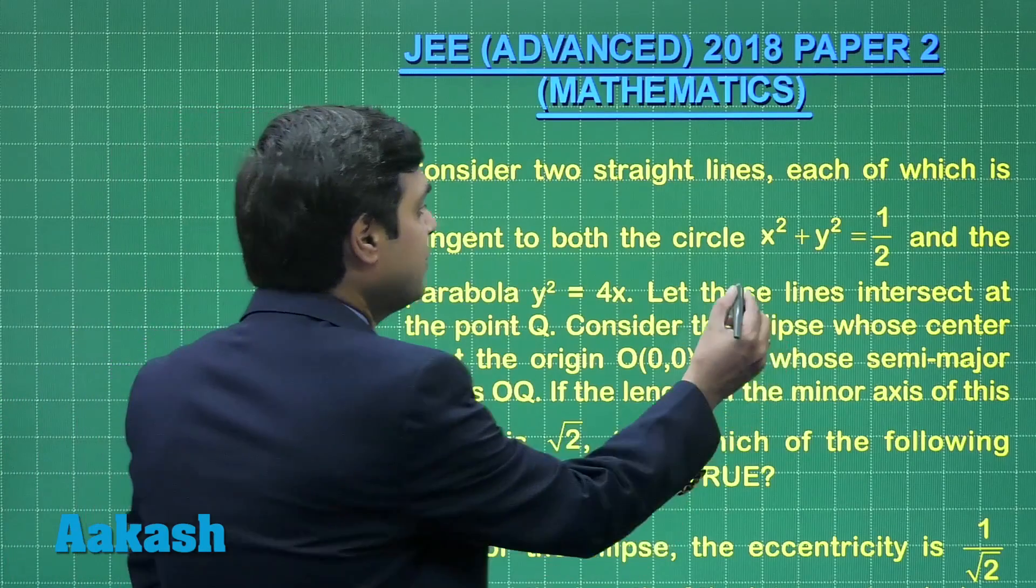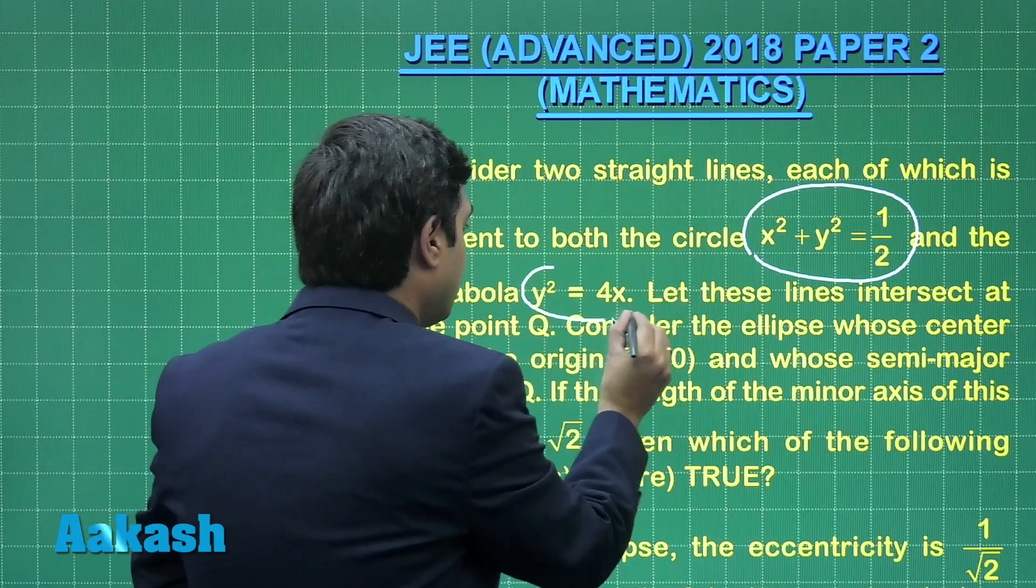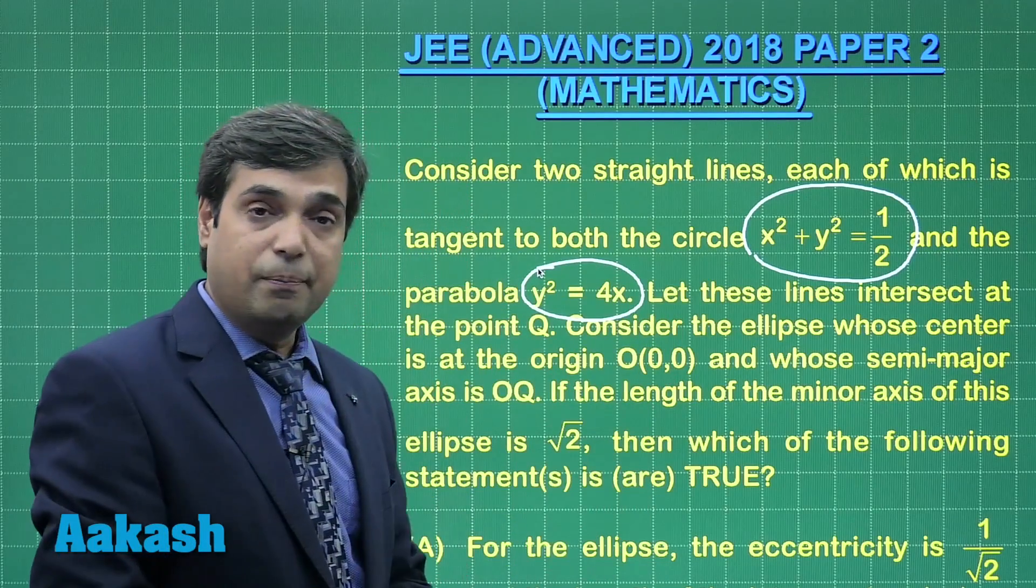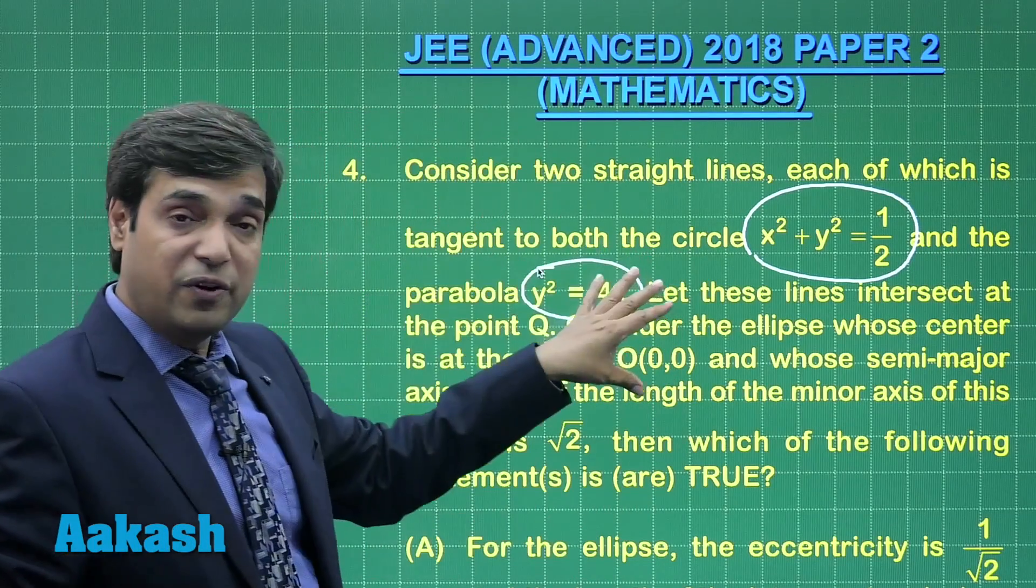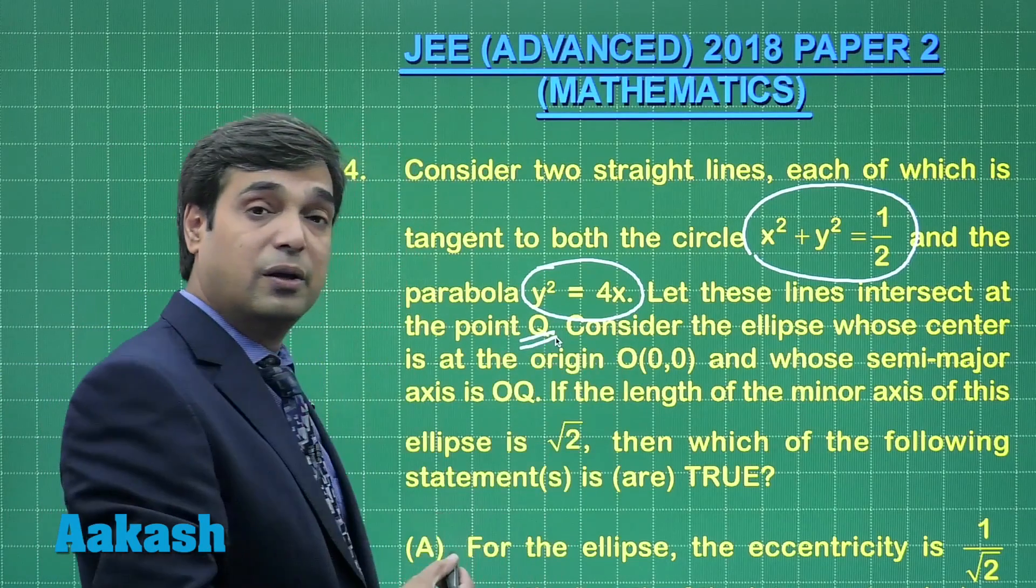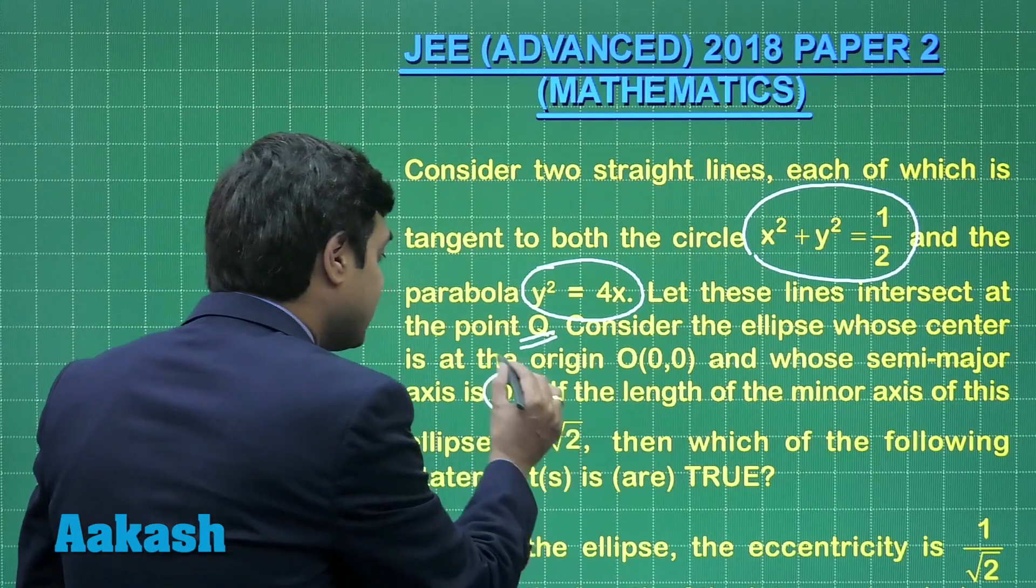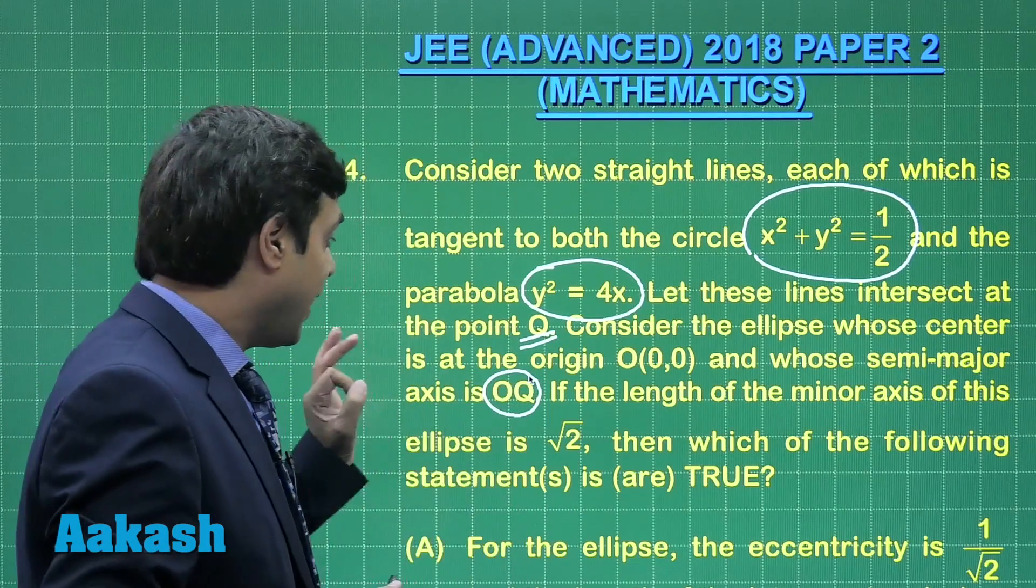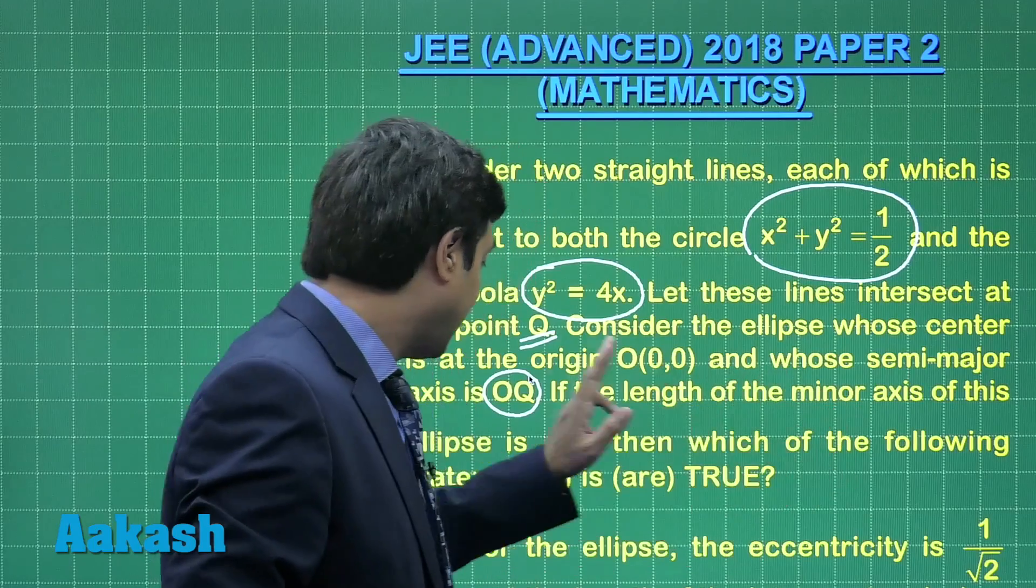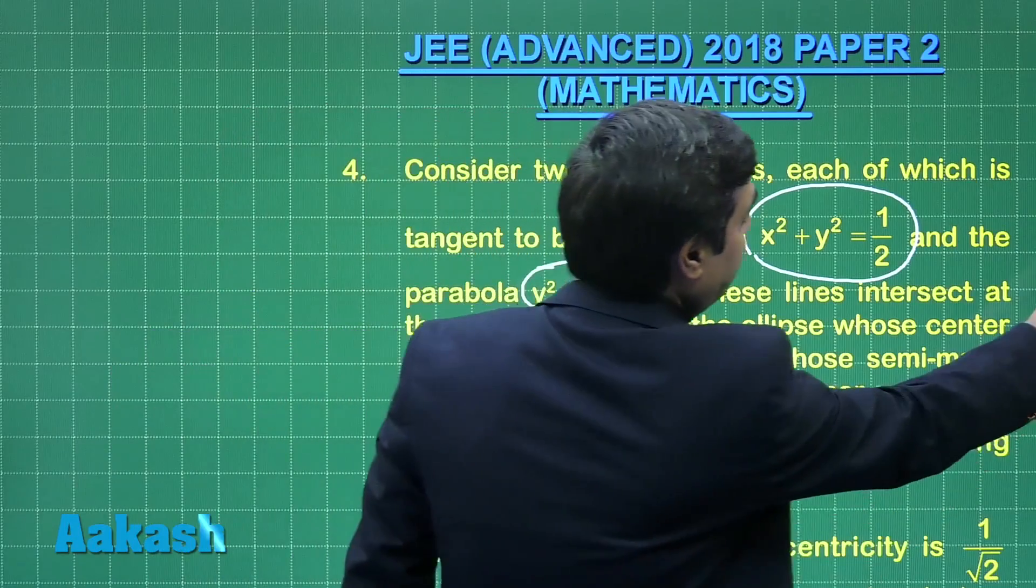So what we are doing is first we are talking about common tangents to circle and parabola. Then the point of intersection of those common tangents is obtained as Q. Then we are drawing an ellipse with OQ as semi-major axis. If the length of the minor axis of this ellipse is √2, then which of the following statements are correct?